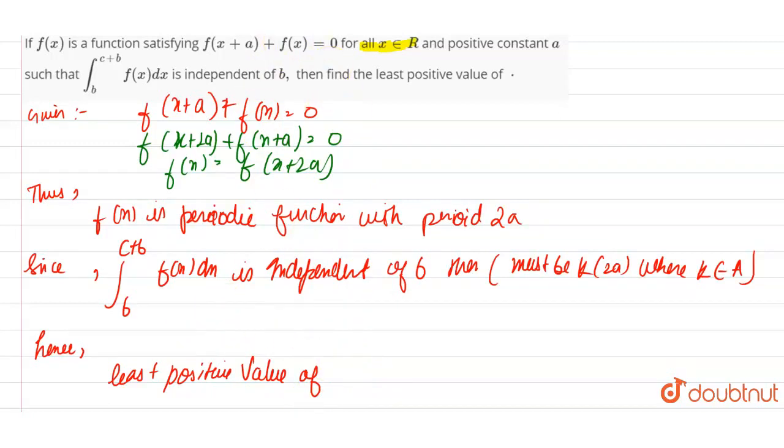So the least positive value of c is 2a. The final answer is 2a. Thank you very much.